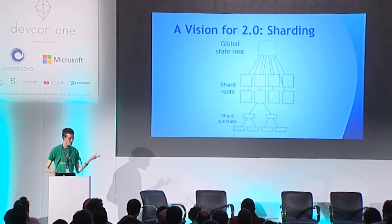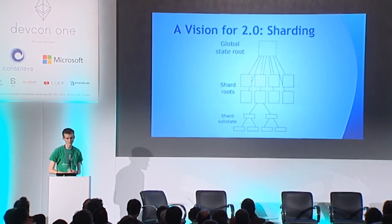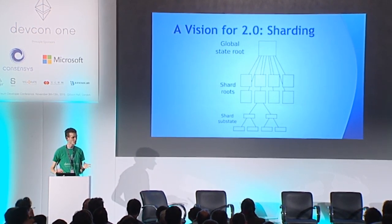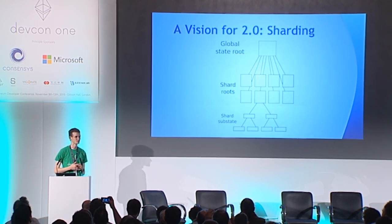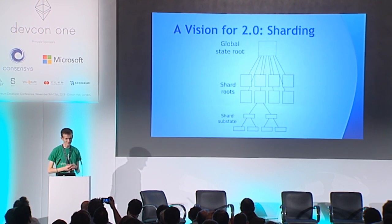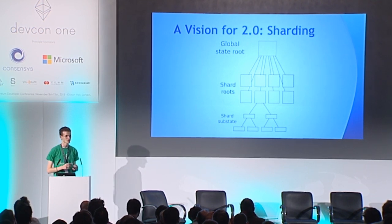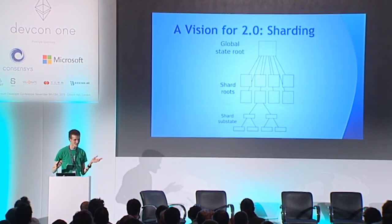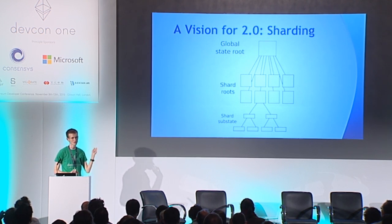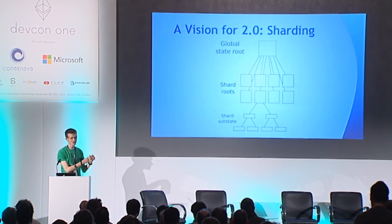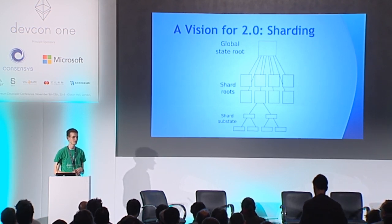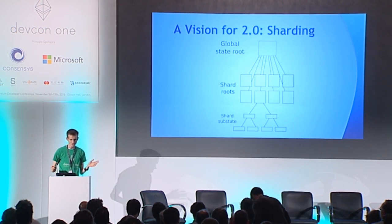The basic vision for 2.0 is this concept of sharding. Instead of having one global state seen by absolutely everyone, you just split the state up into chunks called shards. Each of these shards contains its own state — you can imagine each shard containing some portion of all of the accounts — and you can potentially have a few hundred or a few thousand of these.